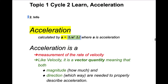Change in velocity over change in time is the formula that defines acceleration. Acceleration is a measurement of the rate of change of velocity. Like velocity, it's a vector quantity — meaning there's an amount and a direction — so direction matters with acceleration.